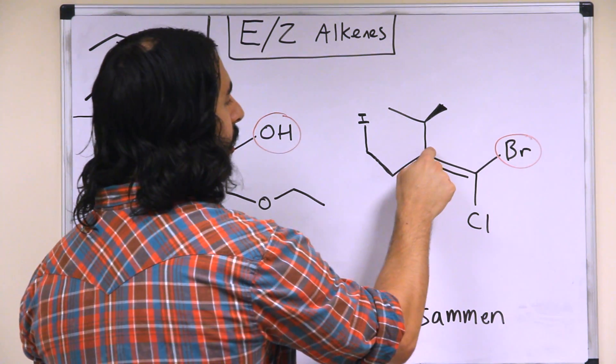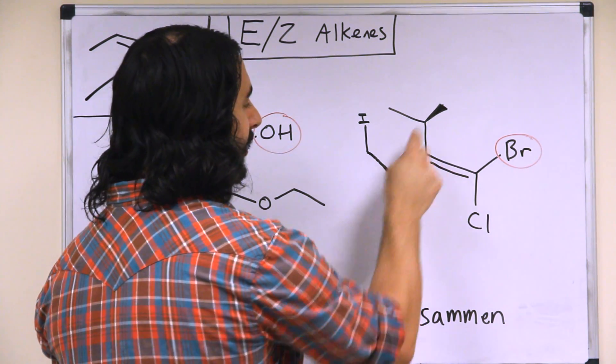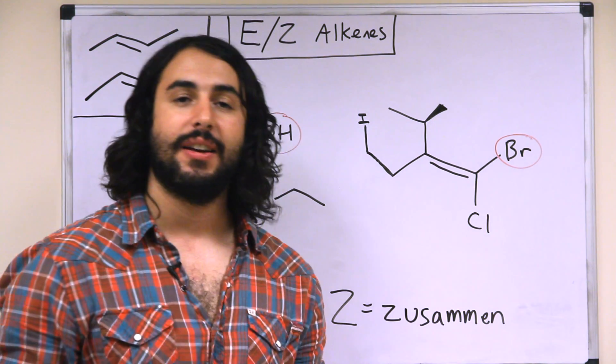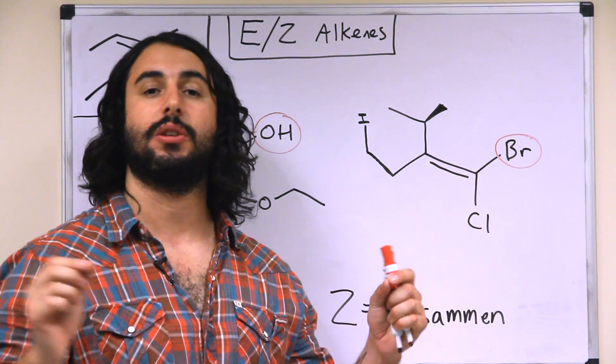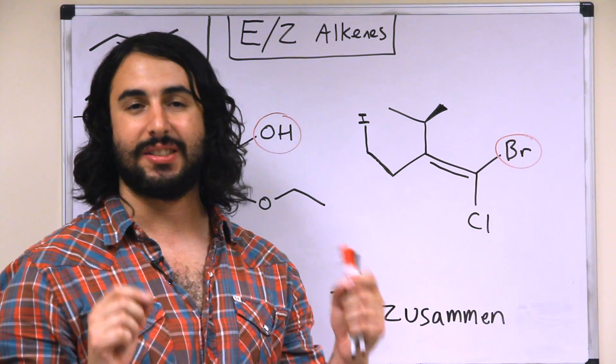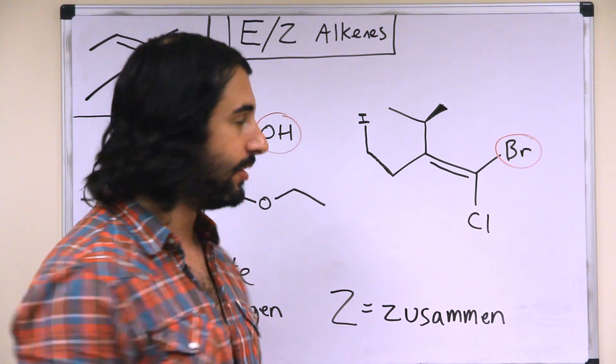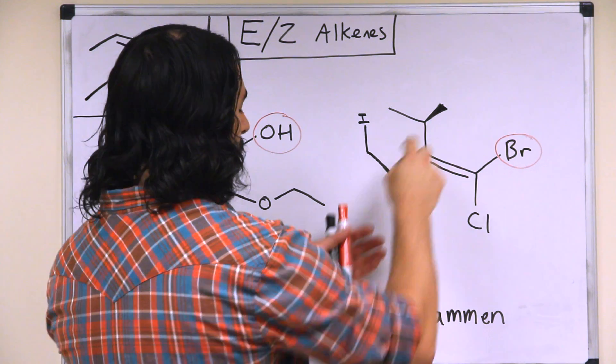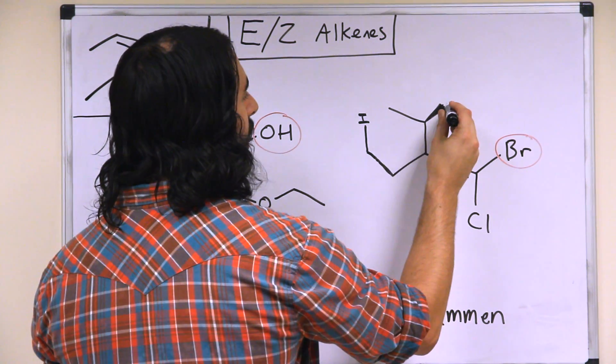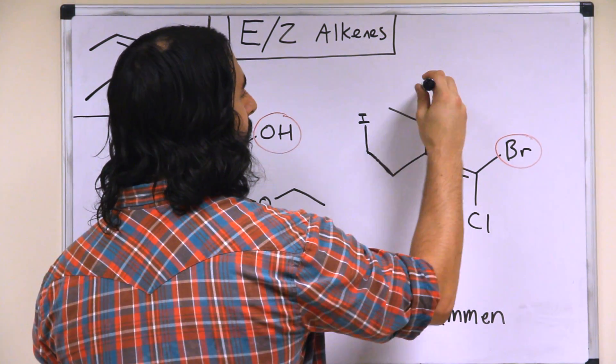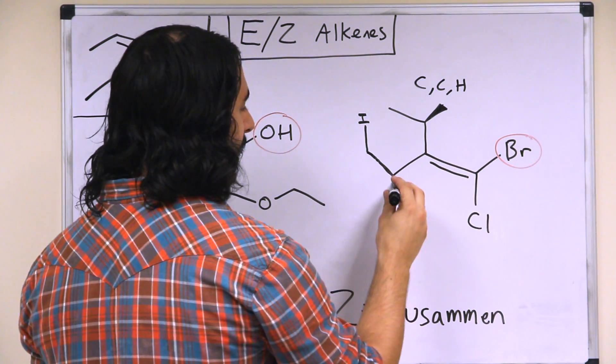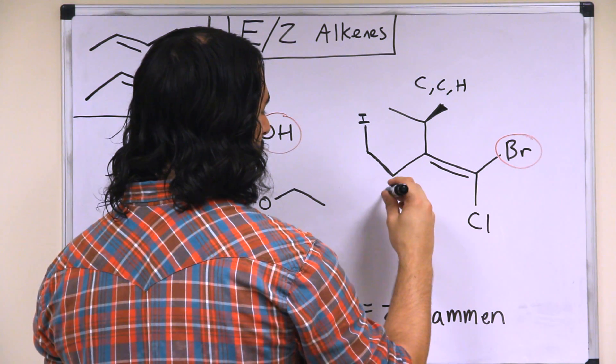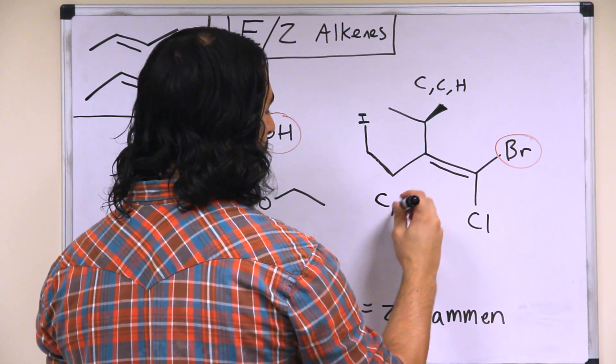Now over here this carbon is bound to a carbon on this side and a carbon on that side. Now here we have a tie, so that means that we have to continue until there is a point of difference, so we must see what these carbons are attached to. On the top we have a carbon that is attached to this carbon, this carbon, and the implied hydrogen. So carbon, carbon, hydrogen. Down here this carbon is attached to one carbon and then two hydrogens.